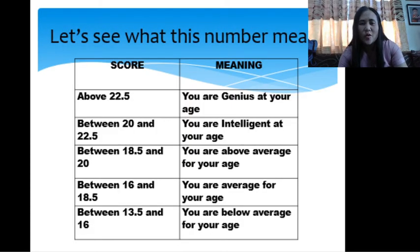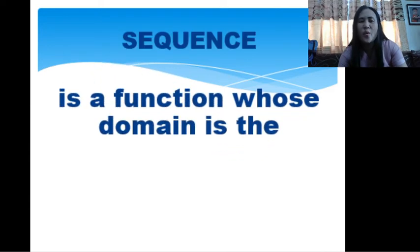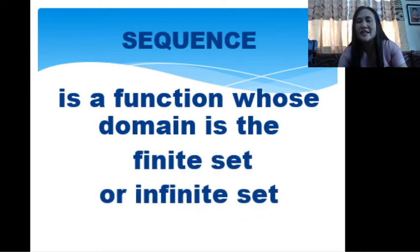Let us see: 20. This number means you are intelligent at your age. Your score is 20. You are intelligent at your age. Did you enjoy? So now, let us define what is a sequence. All those examples I gave you represent a sequence, and what do you observe? A sequence is a finite or infinite set where you have a particular pattern.